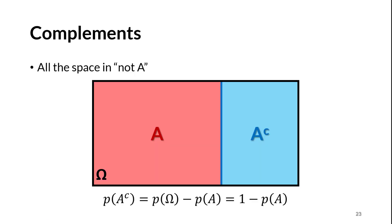Complements are more than just flattery — they can make certain kinds of problems much easier. The complement of A is written A superscript C, or A complement. It's any event that can occur when A doesn't occur. For a coin flip, the complement to heads is tails. For a die roll, the complement to rolling a 1 is rolling a 2, 3, 4, 5, or 6. A and A complement form a partition, because either A happens or it doesn't — nothing else can happen, and they can't happen at the same time. One handy relationship: the probability of A not happening is simply 1 minus the probability of A.